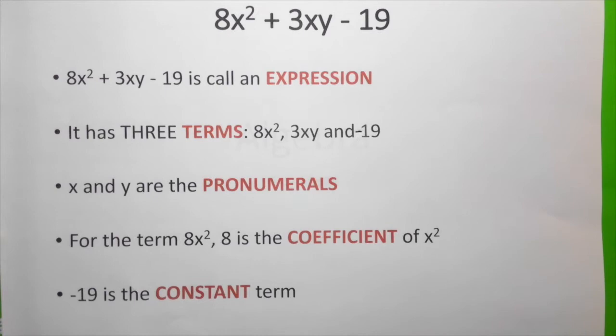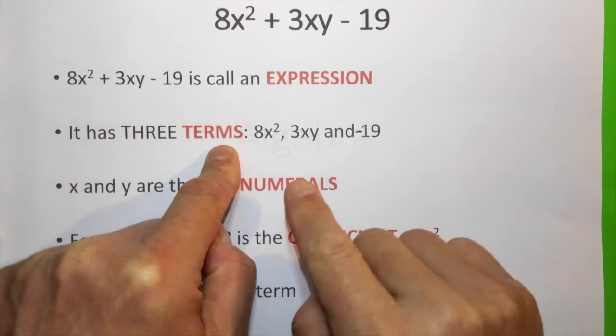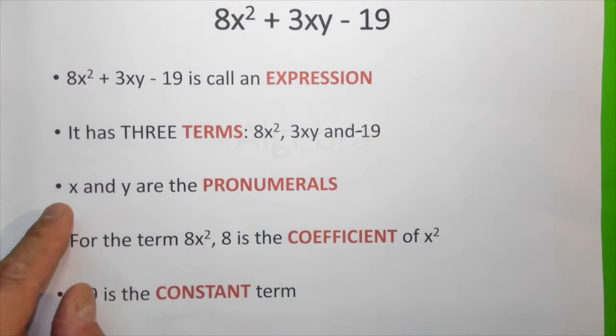8x squared plus 3xy minus 19. This is actually known as an expression. This is an expression with three terms: 8x squared, one of the terms, 3xy and minus 19.